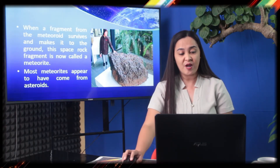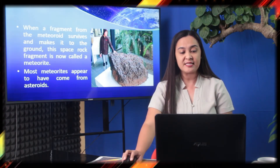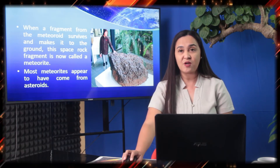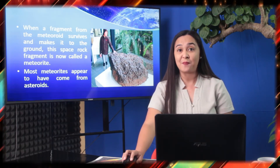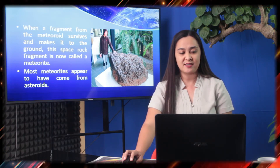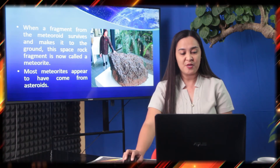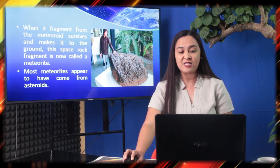When a fragment from a meteoroid survives and makes it to the ground, this fragment is now called a meteorite. Most meteorites appear to have come from an asteroid.